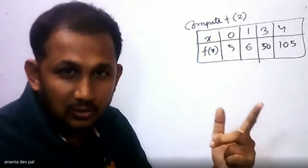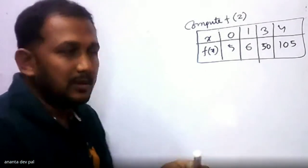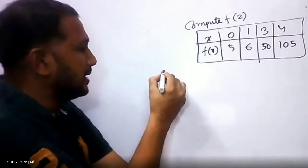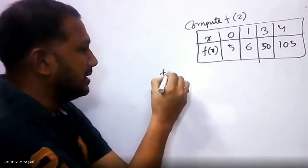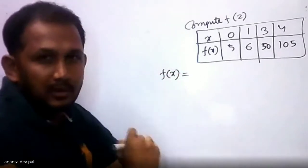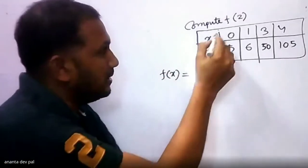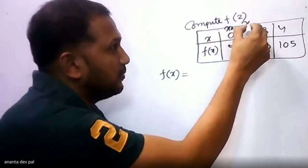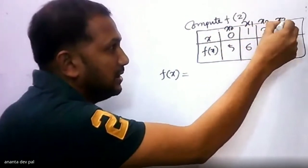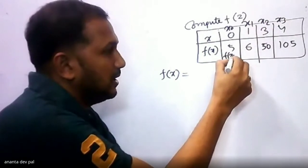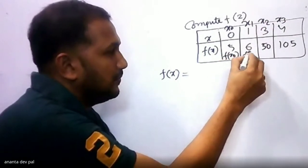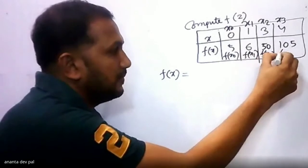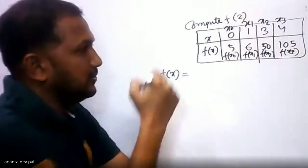Now let us calculate the value of f(2). First, we have to find out the formula. The formula can be created like this. f(x) equals — let us consider the table values. This one is x0, this one is x1, this one is x2, and this one is x3. And f(x0), f(x1), f(x2), f(x3) are the function values.